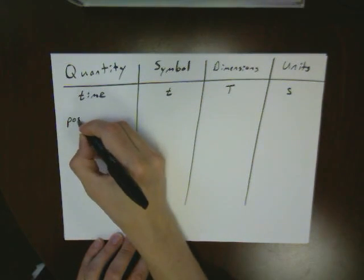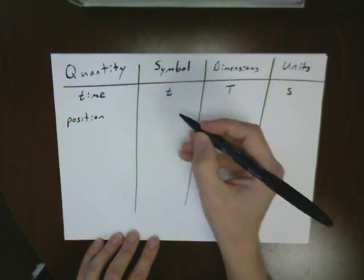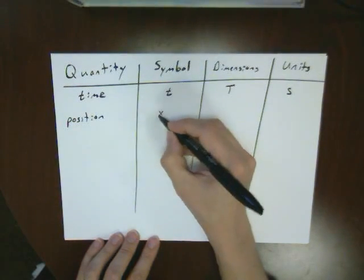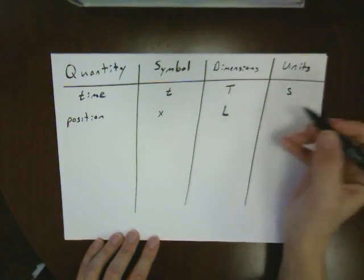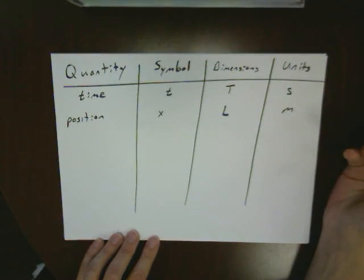We then have things like positions and displacements. And a position might be an X or a Y or something like that. It has a dimension of length and a standard of meters.